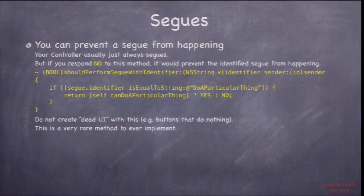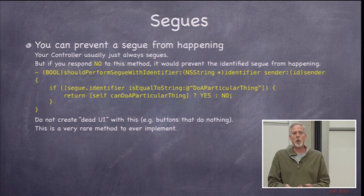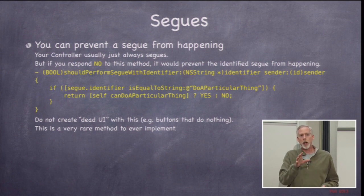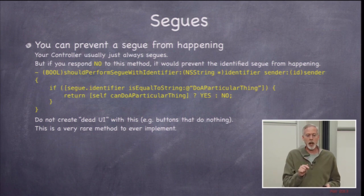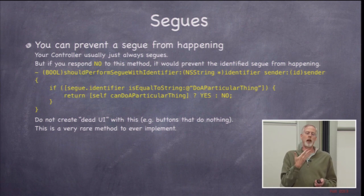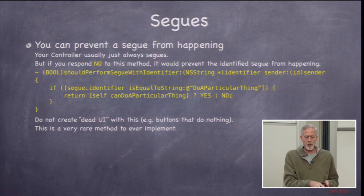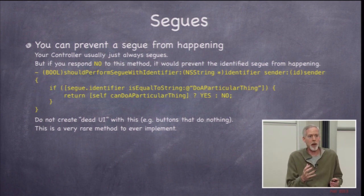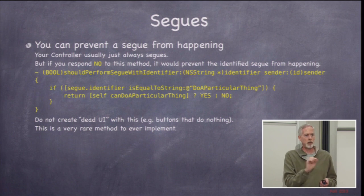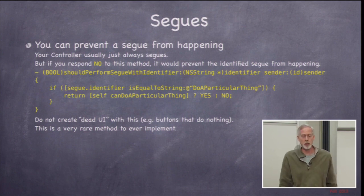It's also possible to prevent a segue from happening using shouldPerformSegueWithIdentifier:sender: — you return YES or NO. Why would you not want a segue to happen? Say a button normally segues, but for some reason it can't — maybe no permission — so instead you want to put up an alert. You can't have target-action put up the alert AND have the segue happen. So you prevent the segue with this method, and the target-action on the button puts up the alert instead. They need to be mutually exclusive.